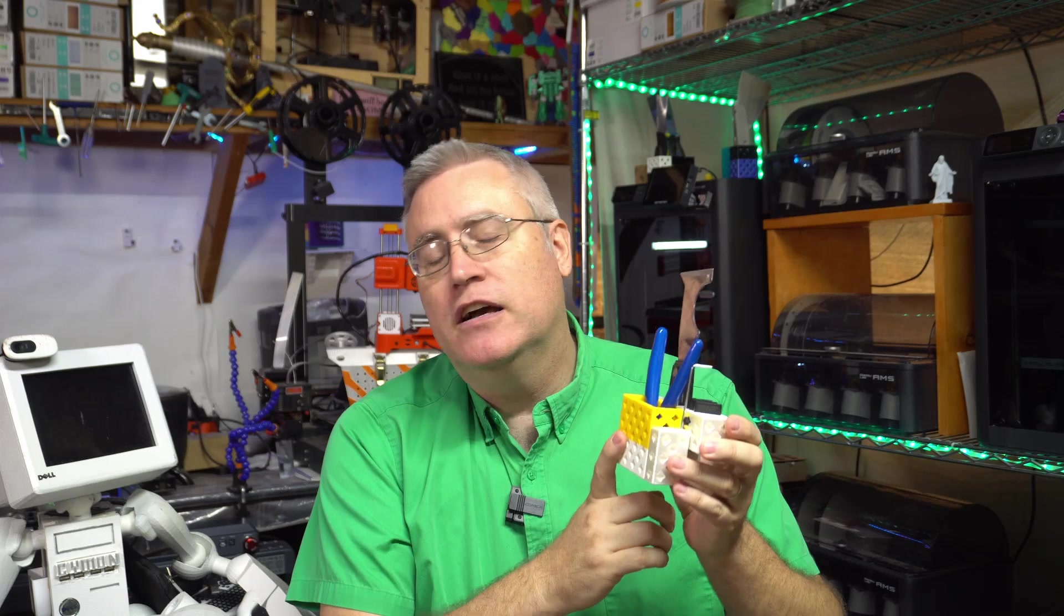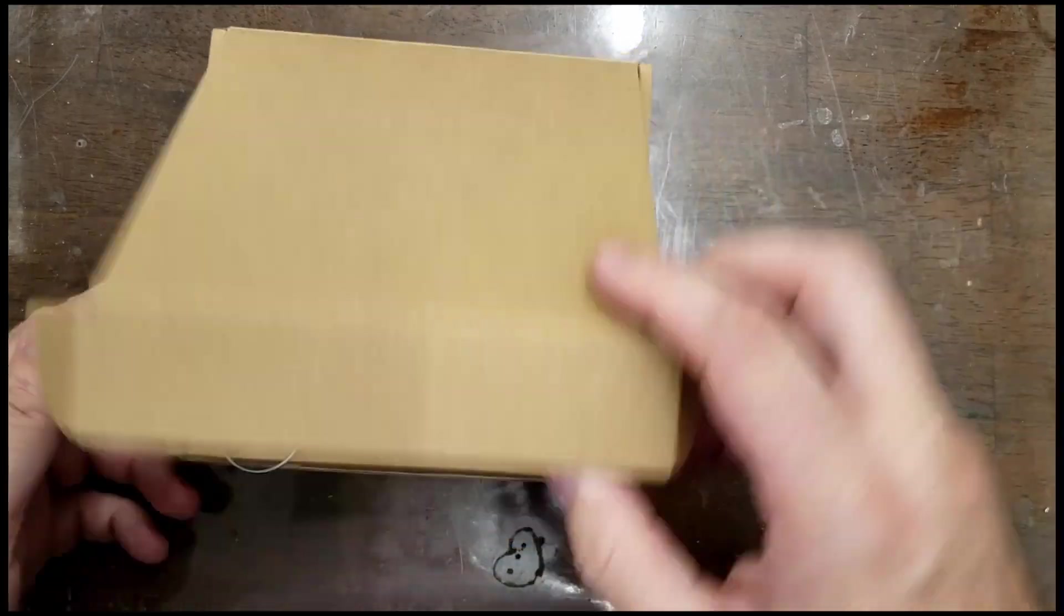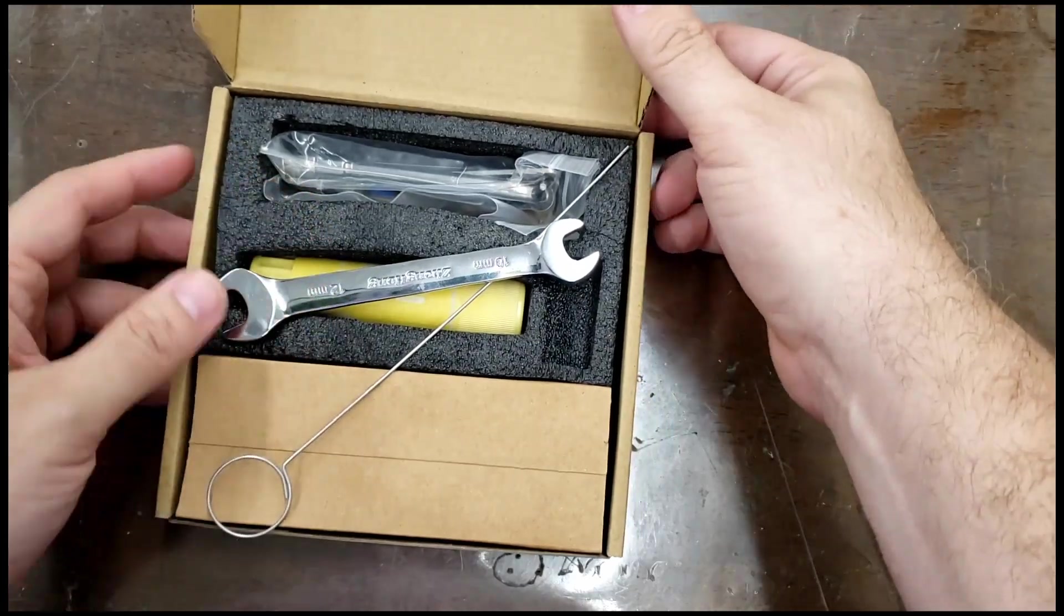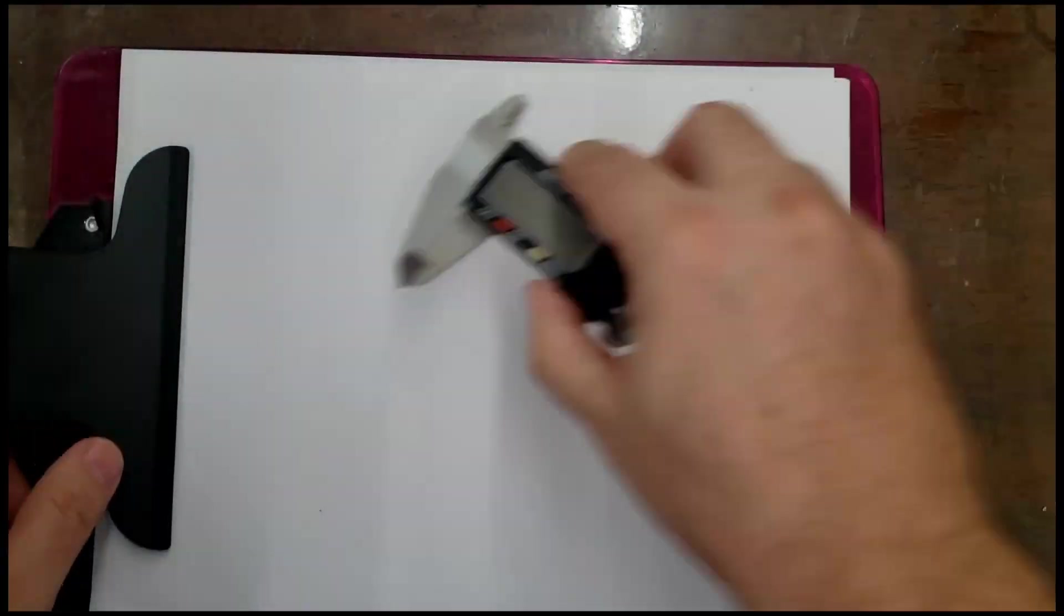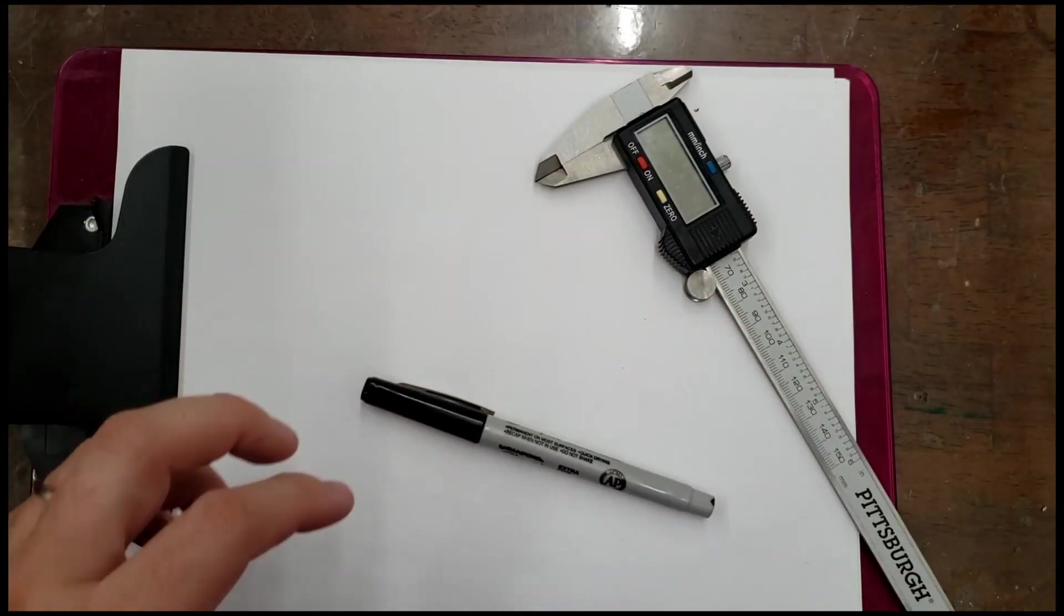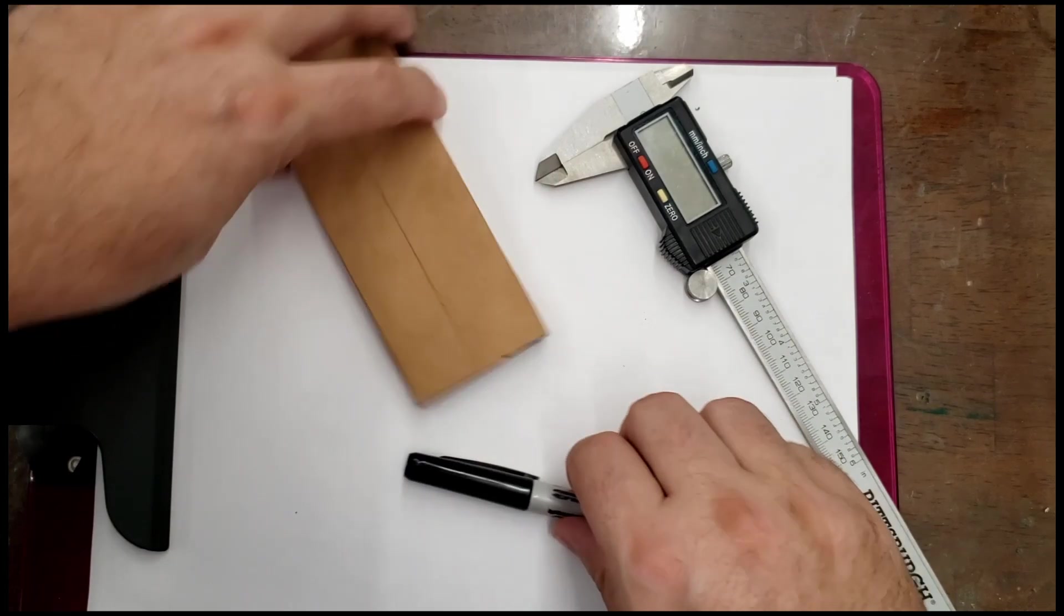So let me give you a quick example of how easy it is to make a custom storage solution using Storabloks. These are the tools that came with my Creality K1 and let's use Storabloks to make a better storage system for them. So to begin with we're going to need a piece of paper, some calipers to do some measuring, a pen, and then we're going to take the items from the box and measure their dimensions.